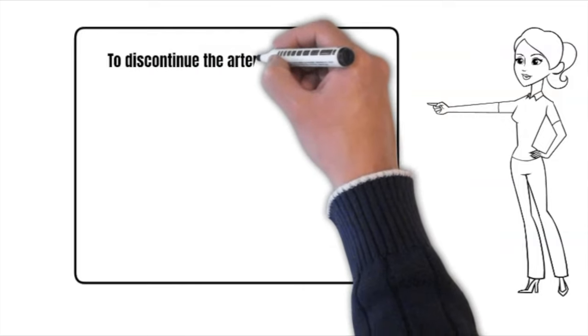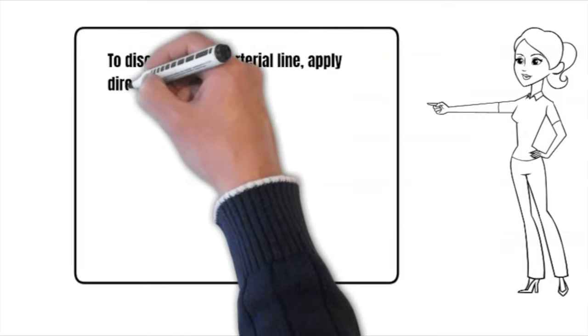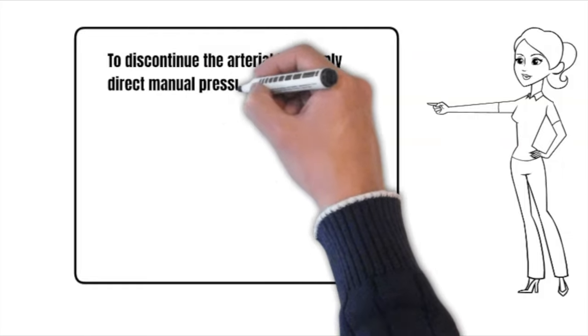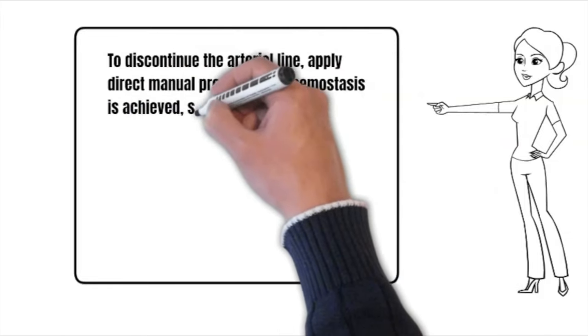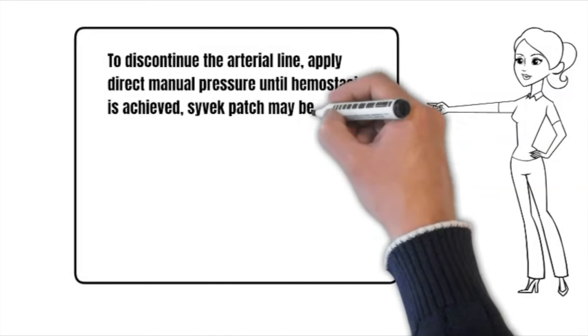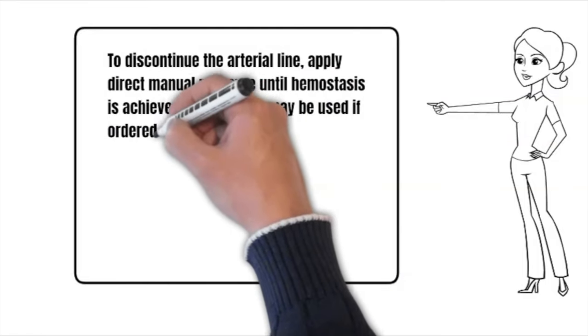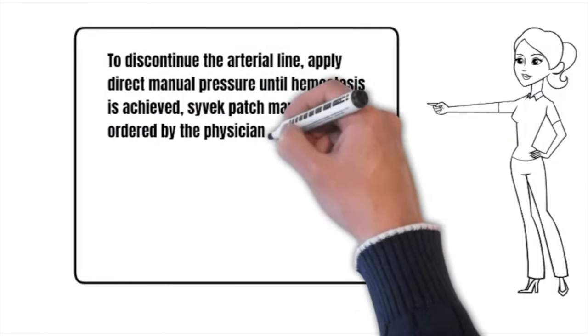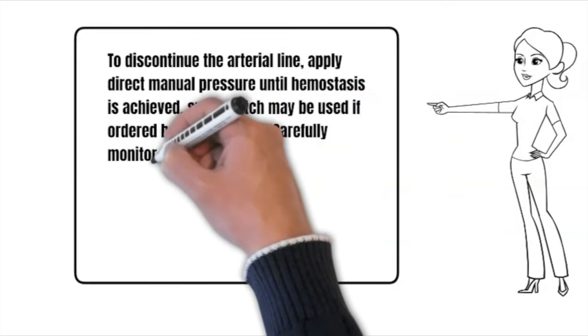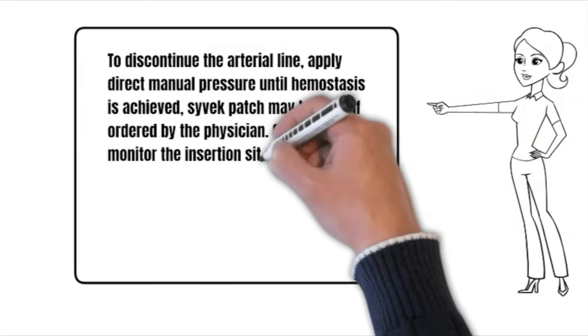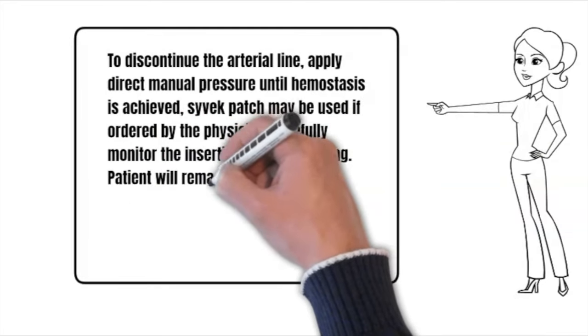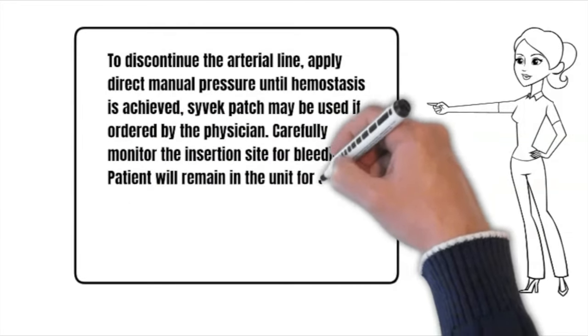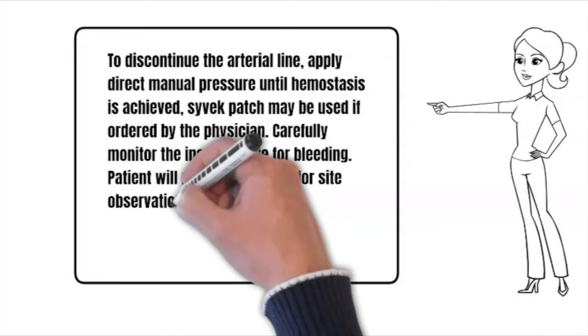To discontinue the arterial line, apply direct manual pressure until hemostasis is achieved. Syvek patch may be used if ordered by the physician. Carefully monitor the insertion site for bleeding. Patient will remain in the unit for site observation after removal of an arterial line and prior to transfer for a minimum of 30 minutes.